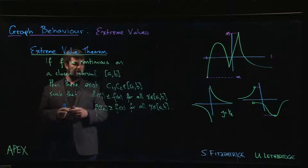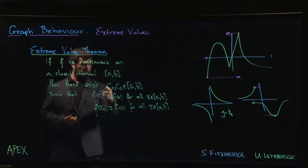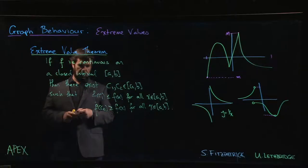So the extreme value theorem guarantees that your function has these bounds. There's an upper bound and there's a lower bound. But it says more. Not only do you have these bounds, but they're actually attained. So there will be values in the interval where you actually achieve these bounds.